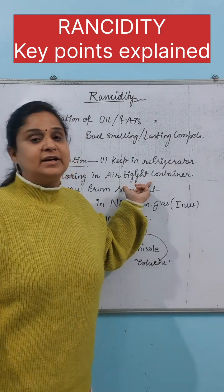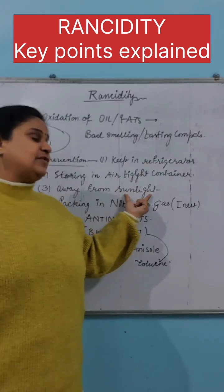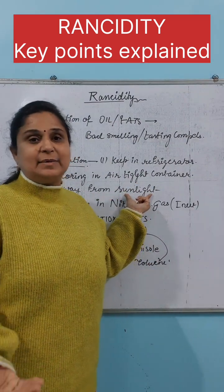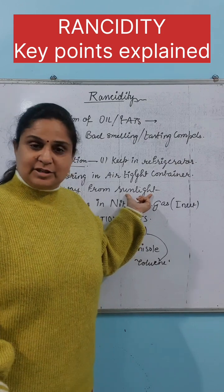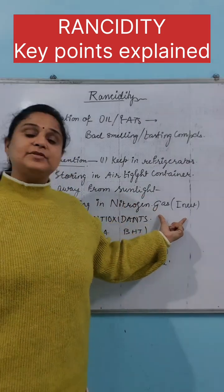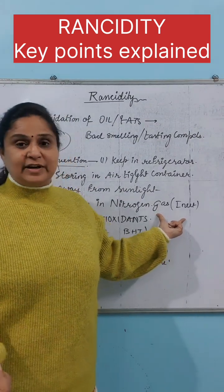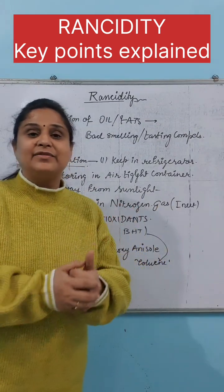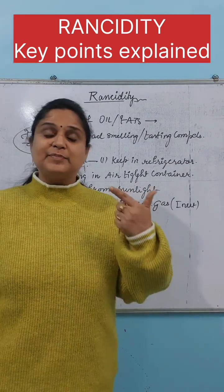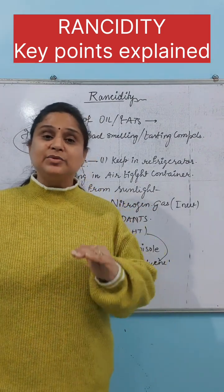If oxygen is not there, it is not going to get spoiled. Next, you can keep it away from sunlight — obviously, less sunlight means lower temperature and slower reaction. Next is nitrogen packing — because nitrogen is an inert gas, it will not react with the oil and helps prevent contact with oxygen.